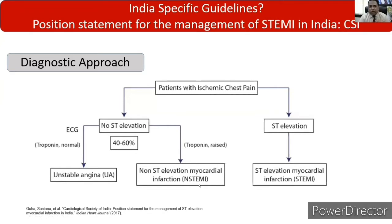There are guidelines given by the Cardiological Society of India regarding the management of ST-elevation MI. They have given a diagnostic approach: whenever a patient with ischemic chest pain presents, if there is ST-segment elevation on ECG, the patient is labeled as a case of ST-elevation myocardial infarction. If the patient doesn't have ST-elevation but troponin values are raised, they will be labeled as non-ST-elevation MI. If troponins are normal with no ST-elevation, it will be called unstable angina. These three entities — unstable angina, non-STEMI, and STEMI — constitute acute coronary syndrome. Our talk today is regarding only ST-elevation myocardial infarction.